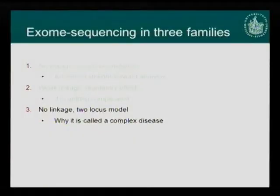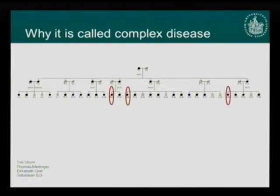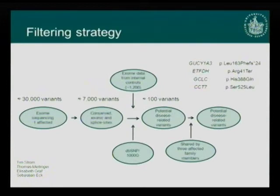Finally, I want to show the last example — a family without any linkage results where we identified a digenic inheritance pattern. We sequenced the exomes of three family members and applied similar filter criteria. In the end, Sanger sequencing left us with four variants: two nonsense mutations and two amino acid changes.